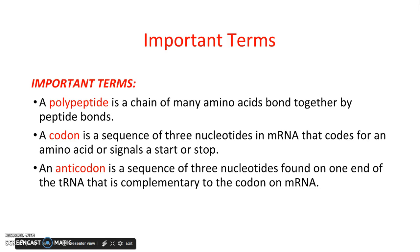Some important terms that you will need to know before we move on: a polypeptide is a chain of many amino acids bound together by peptide bonds. A codon is a sequence of three nucleotides in mRNA that codes for an amino acid or signals a start or stop.